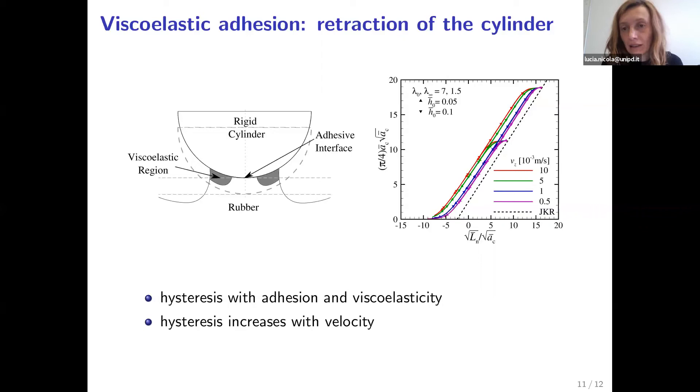We can also plot these data points in a different graph. Here we're plotting the effective work of adhesion with respect to the velocity of the peeling edge. And you can see that there is a reasonable agreement between the data points and this solid line. And the solid line is the analytical solution for a sharp crack opening in a viscoelastic material.